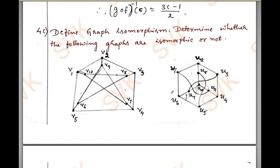That is why we can say that it is an isomorphism. This is the way of giving the conclusion for the given problem of isomorphism — showing one-to-one correspondence between edges and vertices. I think you all understood how to solve the problems of isomorphism. If you have any further doubts, you can put a comment and I will clear your doubts thoroughly. Thank you for watching this video. Do subscribe and share this video with your friends.